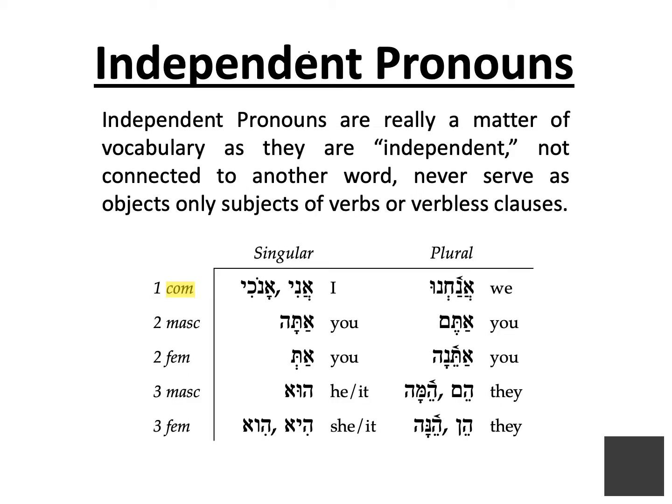We will begin with the independent pronouns. This chart should be memorized, but think of the words more as vocabulary words than as a chart, since the forms do not really change. Also notice that there is no first person masculine as opposed to a first person feminine. First person is simply first person, so we call it first person common, since the form covers both genders.